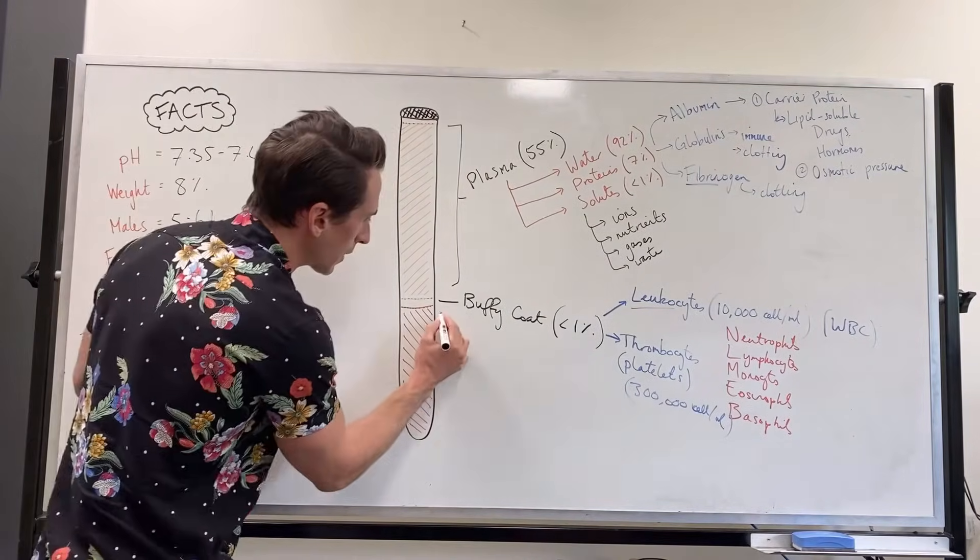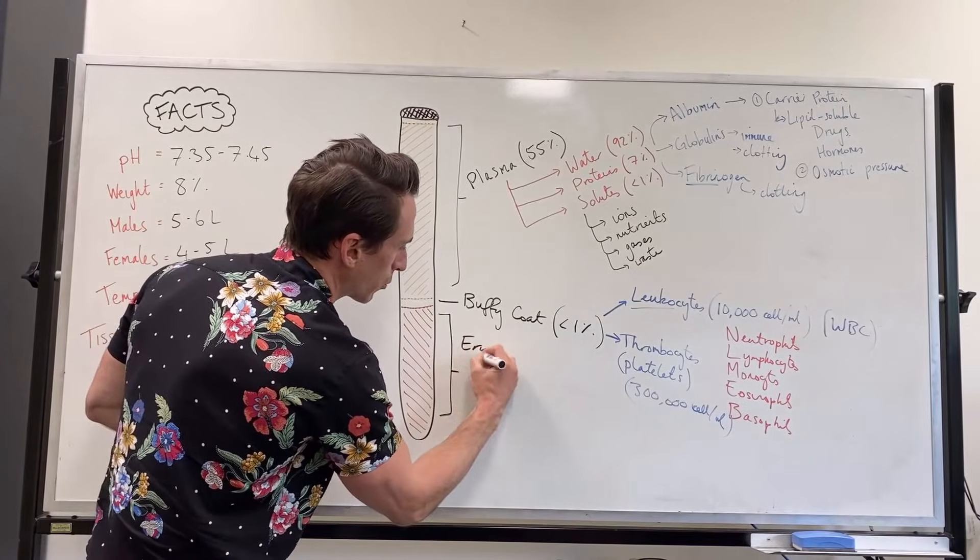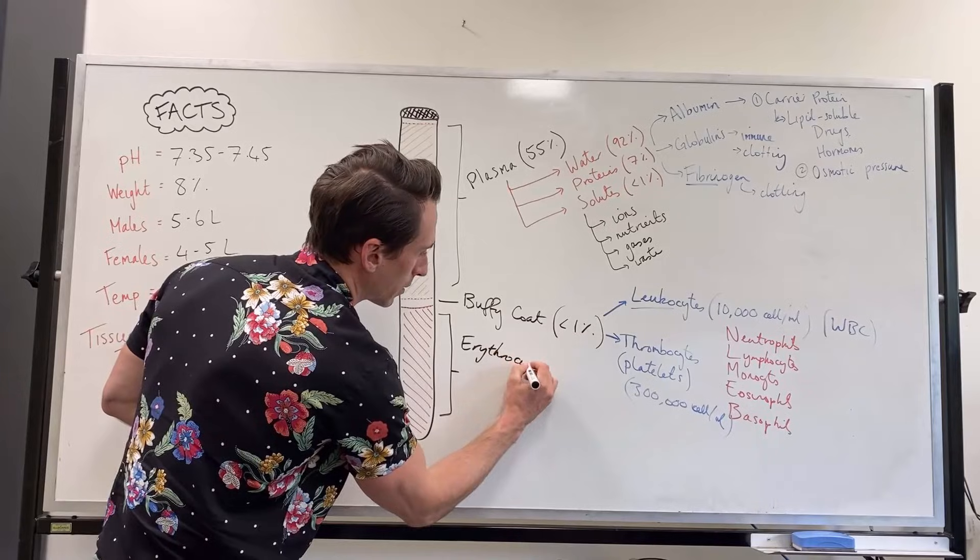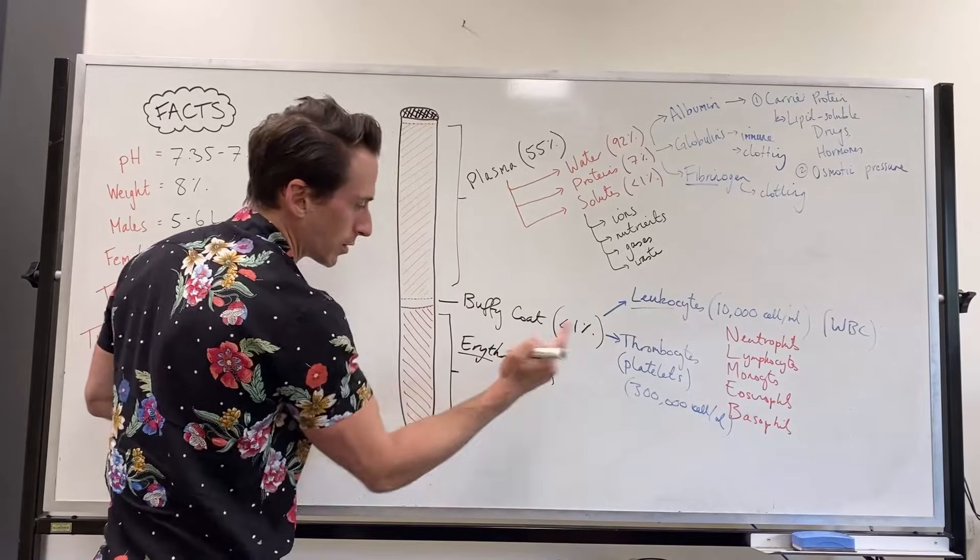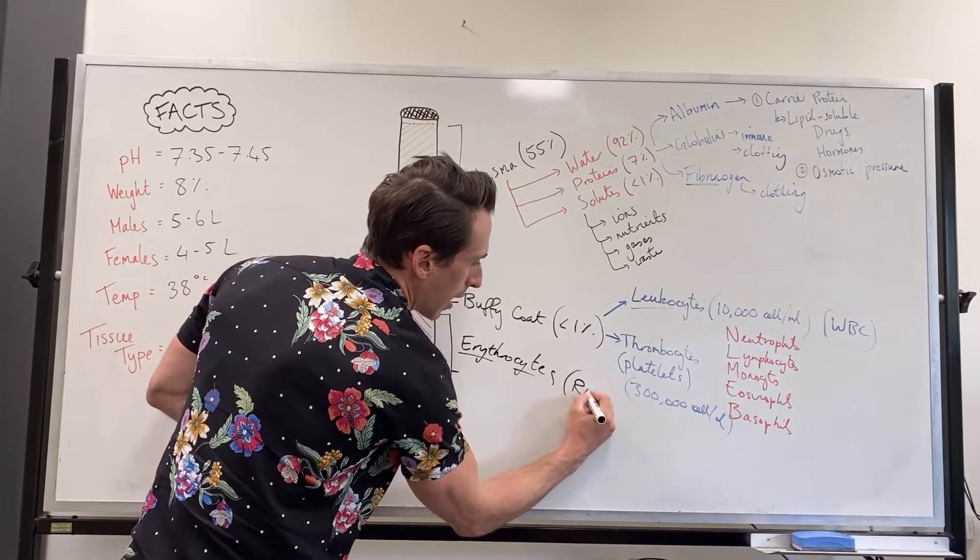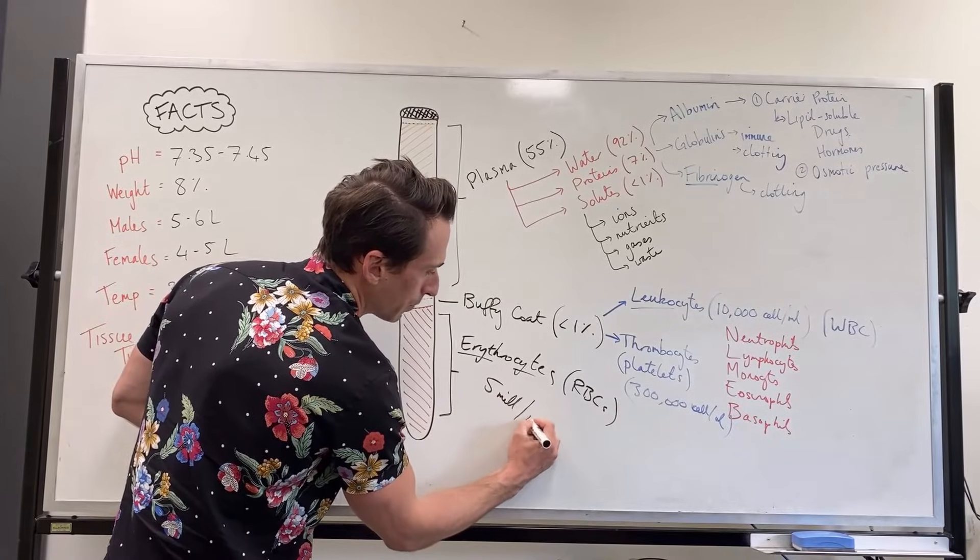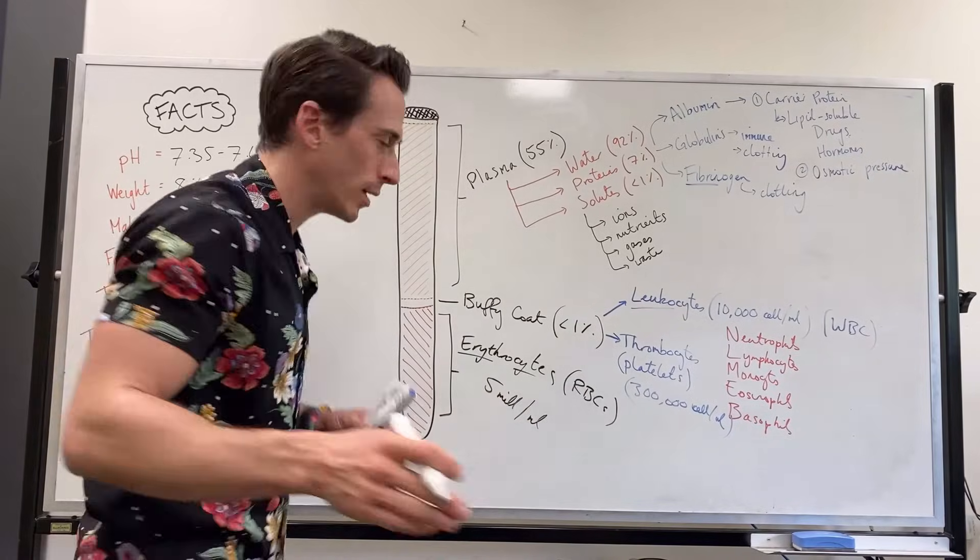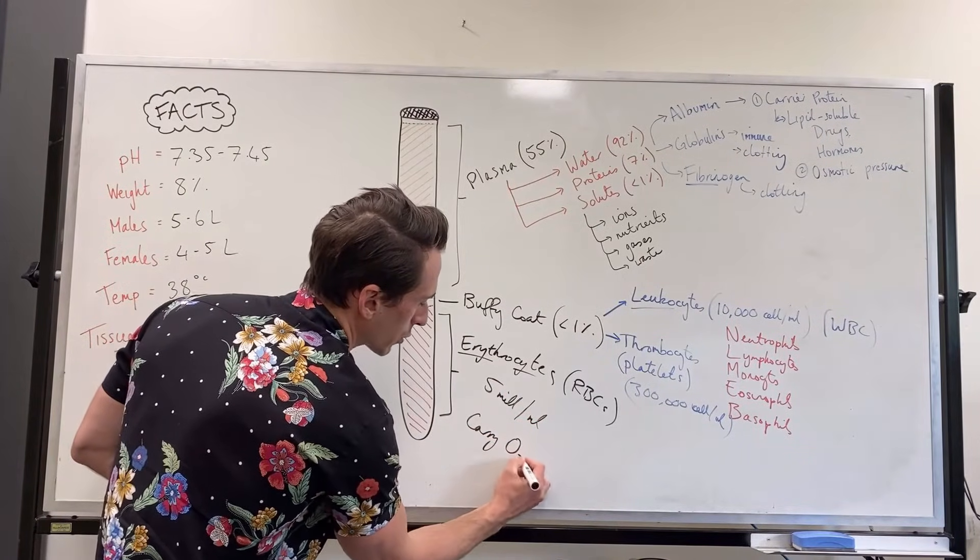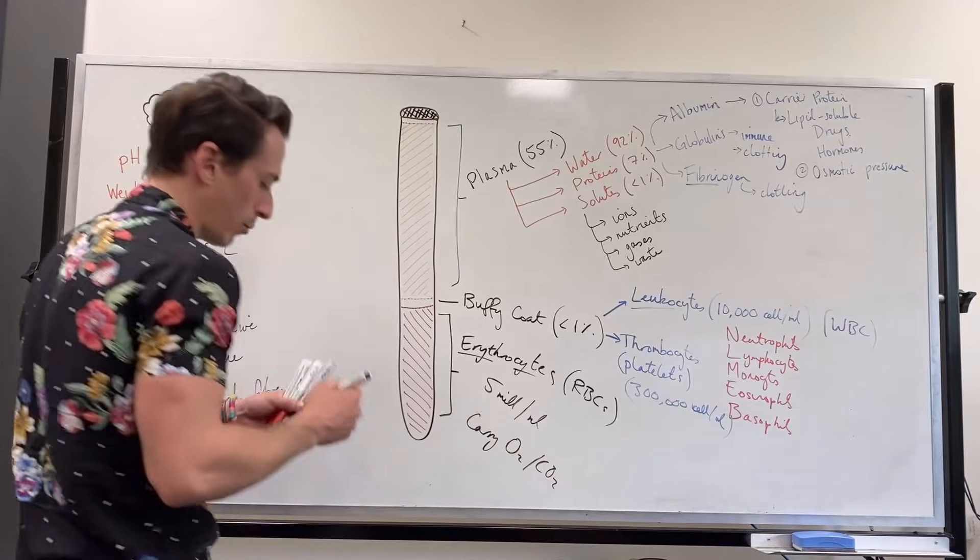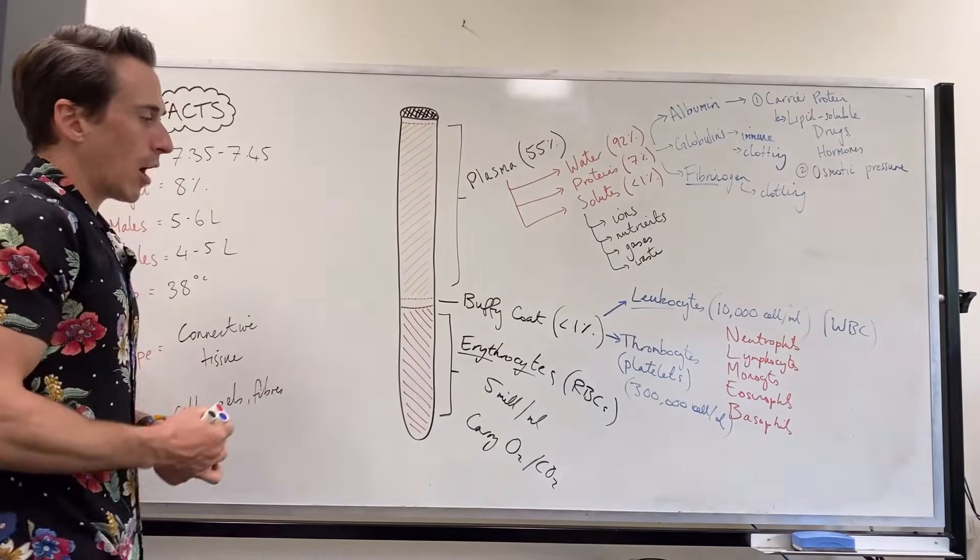The last one down the bottom is erythrocytes, which means red cells. Leukocytes, white cells, erythrocytes, red cells. So they're the RBCs, red blood cells. And we have around about 5 million per mil, one of the most abundant cells in the entire body. And what they do is they carry gases. They carry oxygen, carbon dioxide, really important. Red blood cells are filled with hemoglobin that carry oxygen.